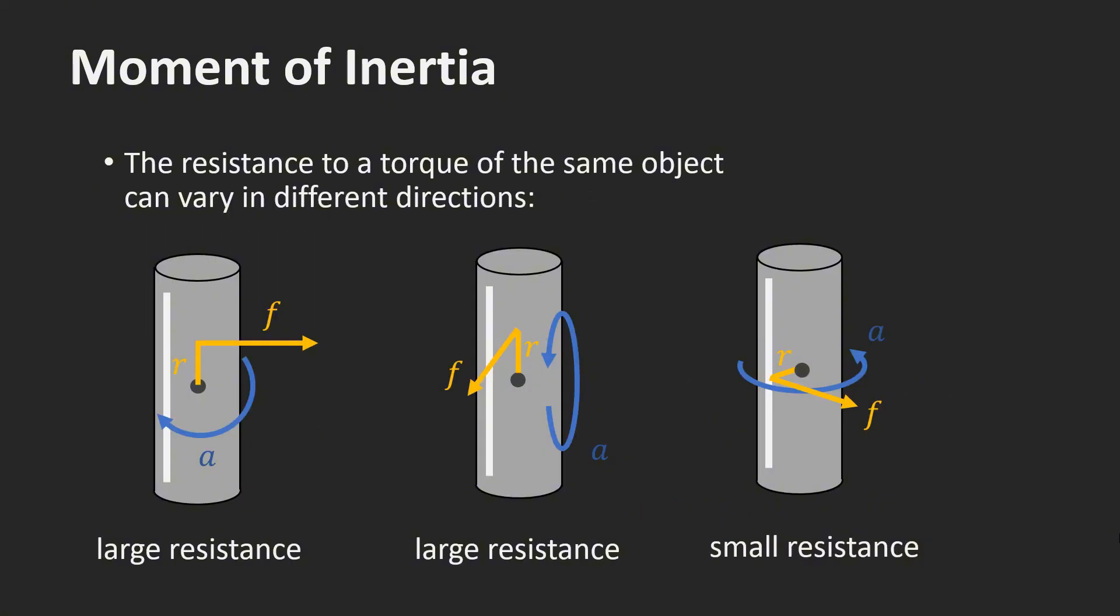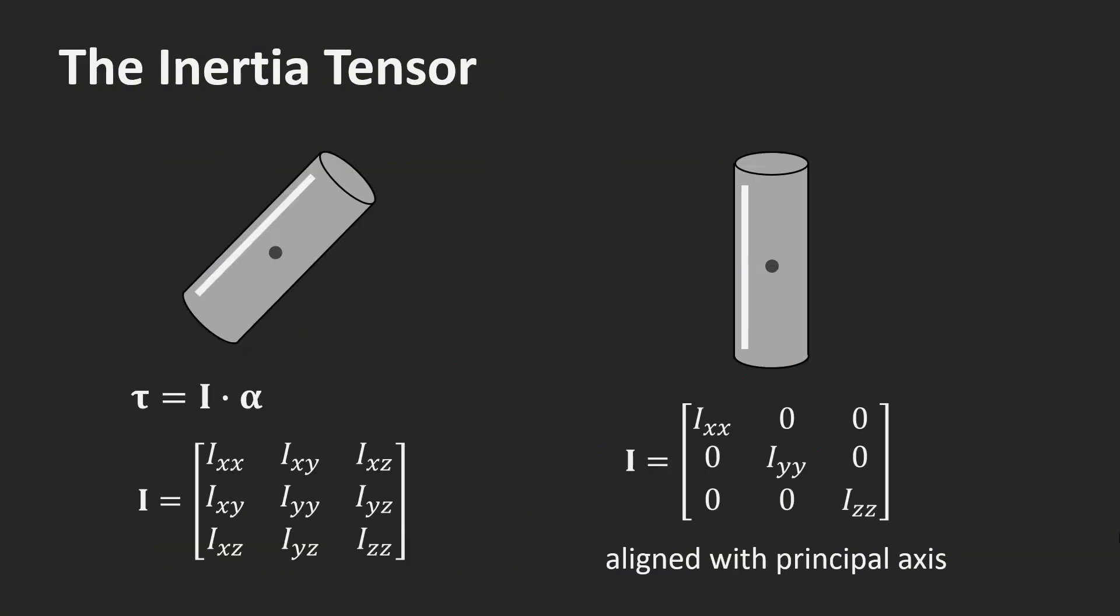In three dimensions, the resistance to a torque can vary in different directions. Here we have a cylinder whose height is larger than its diameter. The resistance to a torque applied perpendicular to the axis of the cylinder is larger than the resistance to a torque applied along the axis of the cylinder. Therefore, we represent the moment of inertia by a 3x3 matrix. In a general pose of a rigid body, all the elements of this matrix are non-zero in general. If we align the body with its principal dimensions, the tensor becomes diagonal and we can store it in a three-dimensional vector. This is what I do in my code.